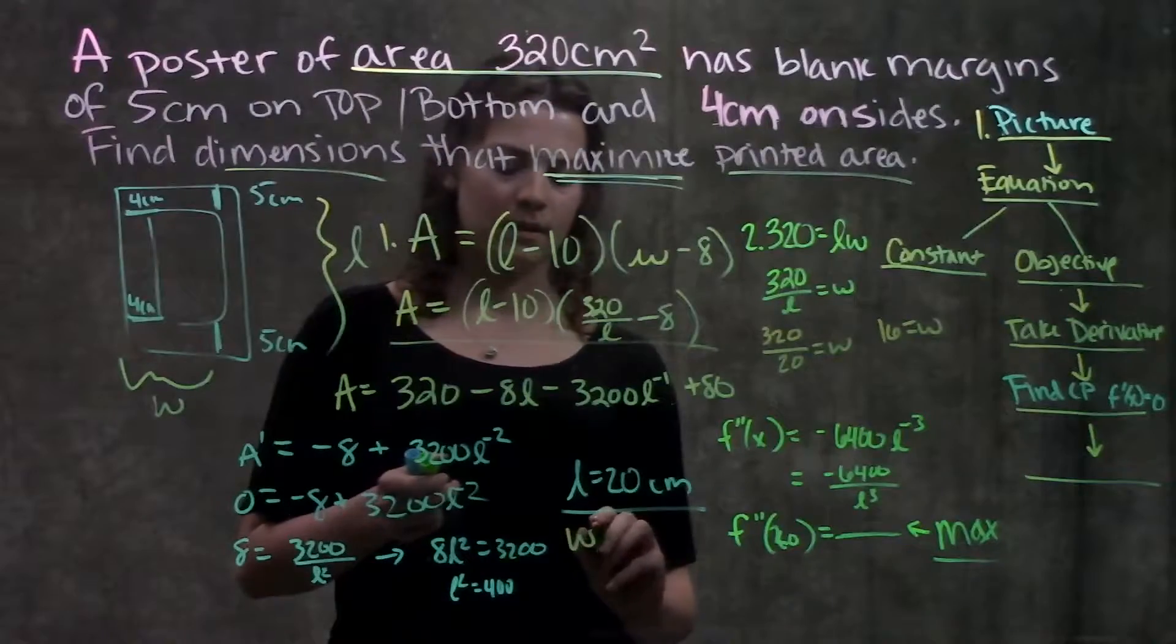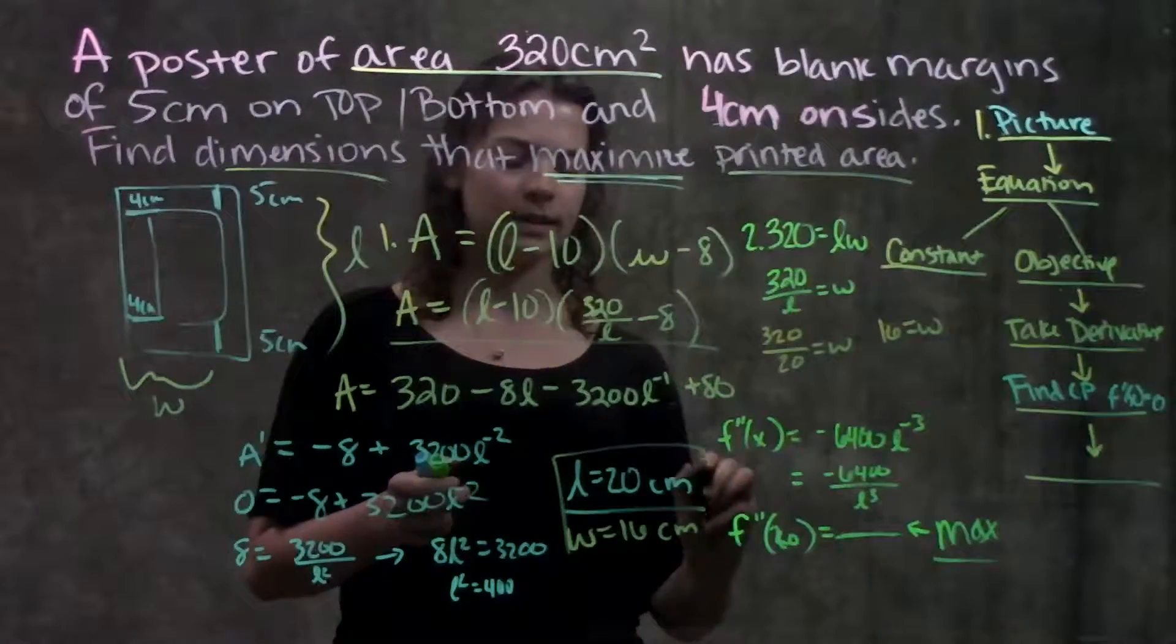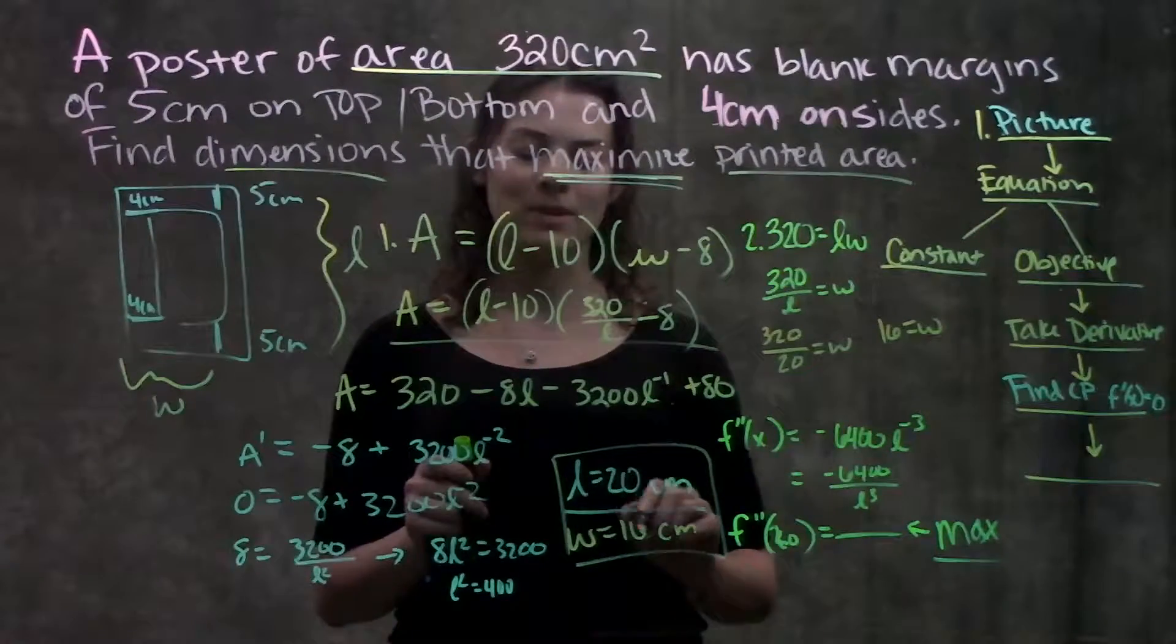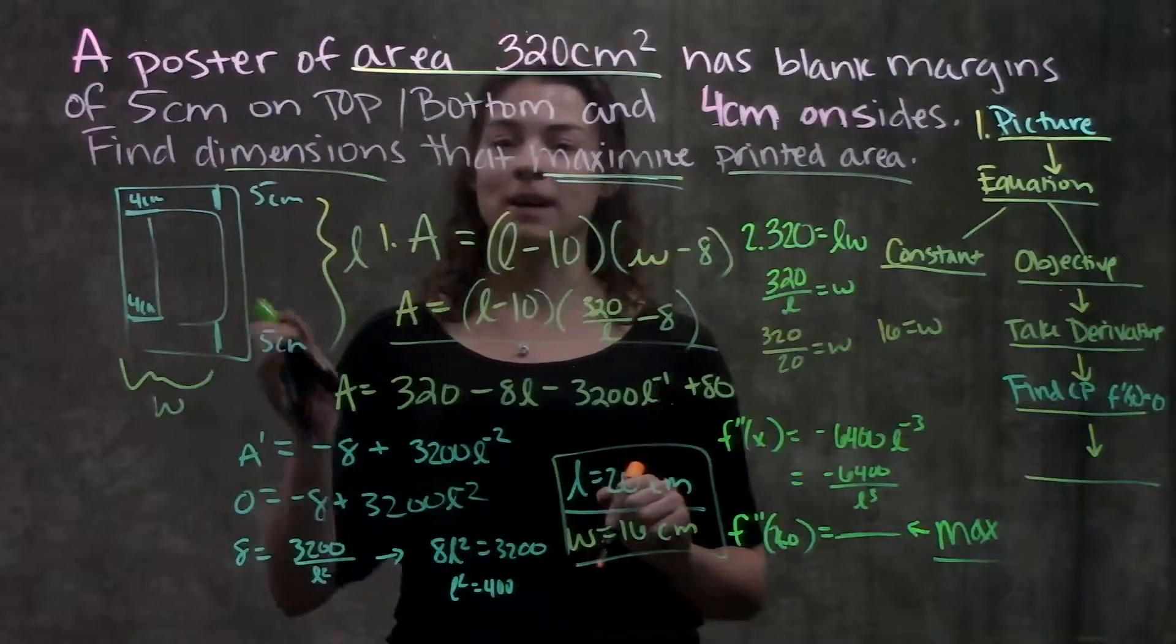So that means that my two dimensions are L equals 20 centimeters and W equals 16 centimeters, to maximize my printed area.